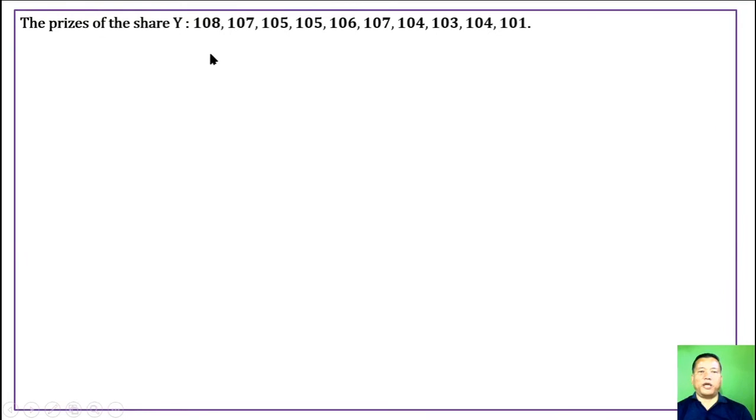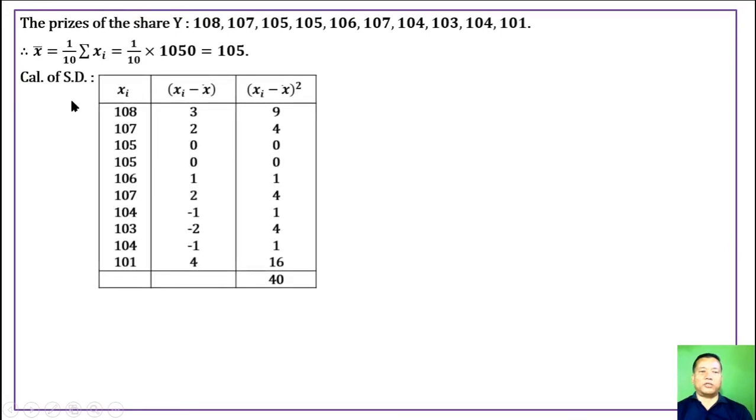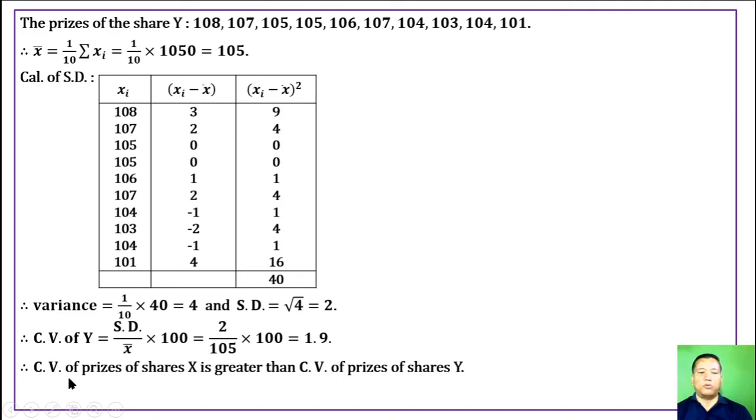The prices of share Y: the mean is 105. Standard deviation calculation gives variance of 4 and standard deviation of 2. Therefore, coefficient of variation of Y is standard deviation by mean into hundred. We get 1.9. Coefficient of variance of prices of share X is greater than coefficient of variance of prices of share Y. Thus, the prices of share Y are more stable than the prices of X.